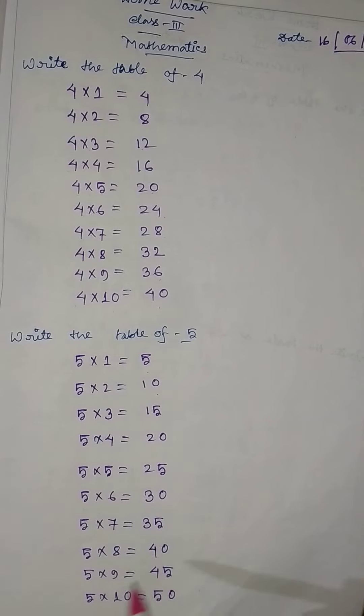5 into 9 equal to 45, 5 into 10 equal to 50. Okay? Thank you.